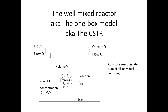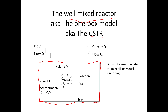Other people might call it a well-mixed reactor. If you're an engineer, you might call it a continuously stirred tank reactor or a CSTR. Regardless of what you call it, the idea is that you have a box, and the first thing you have to do is decide where the boundaries of your box are going to be — what's the boundary of your system? Most of the time, the box is a chunk of water: it could be a lake, or just a section of a river.